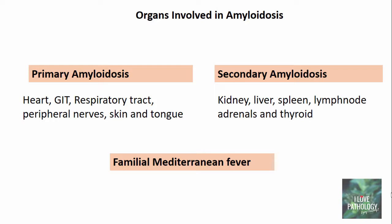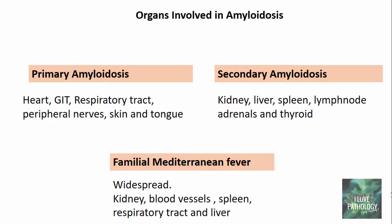In familial Mediterranean fever, the most important feature is that amyloidosis is widespread, where the kidneys, blood vessels, spleen, respiratory tract, and liver are all involved.